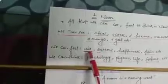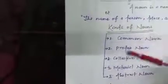Keep one thing in your mind — air, sorrow, happiness, and pain are your nouns. What we can think: psychology, physics, life, fortune, etc. These all are examples of noun. In another common way we can define it: noun is a naming word, or the name of a person, place, or thing is called noun.